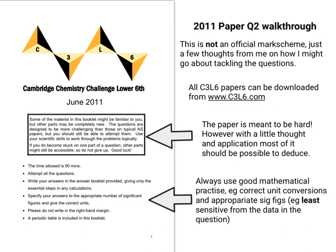When they talk about an appropriate number of significant figures and giving the correct units, you need to give the correct unit conversions. The least sensitive number of significant figures from the data in the question determines your answer - so if it's three, your answer should be three significant figures.